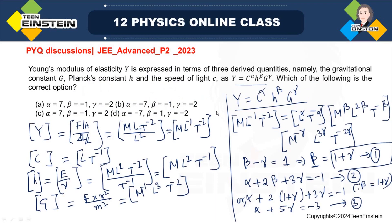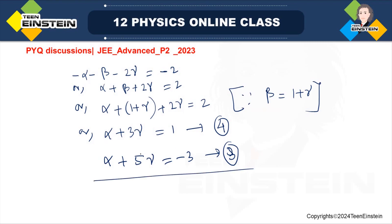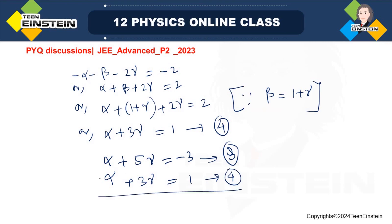Now I have two equations with alpha and gamma. Equation number 3 is alpha plus 5 gamma equals minus 3, and equation number 4 is alpha plus 3 gamma equals 1. If I subtract equation number 4 from equation number 3, I get 2 gamma equals minus 4, so gamma equals minus 2.